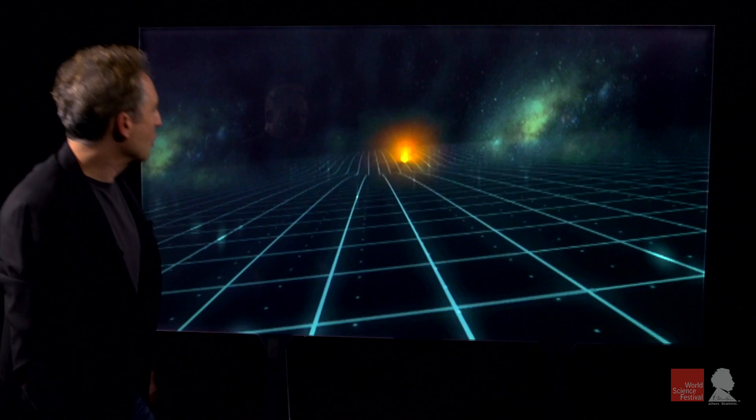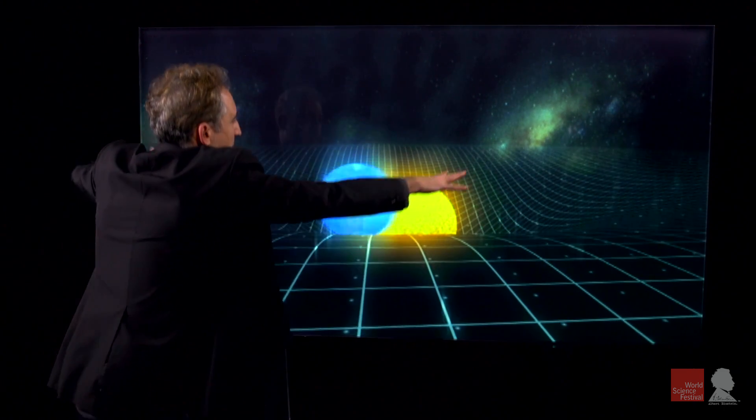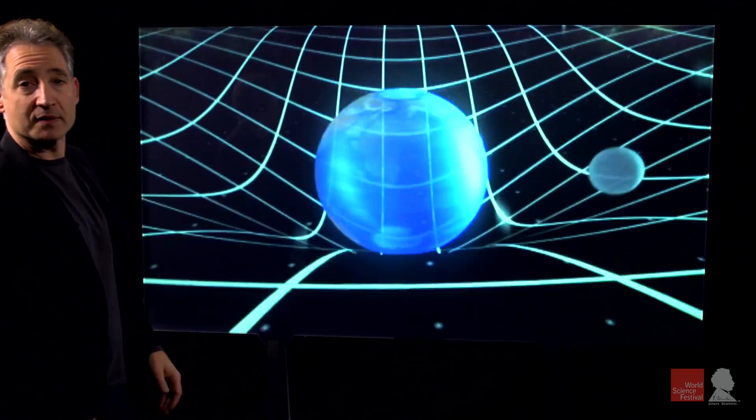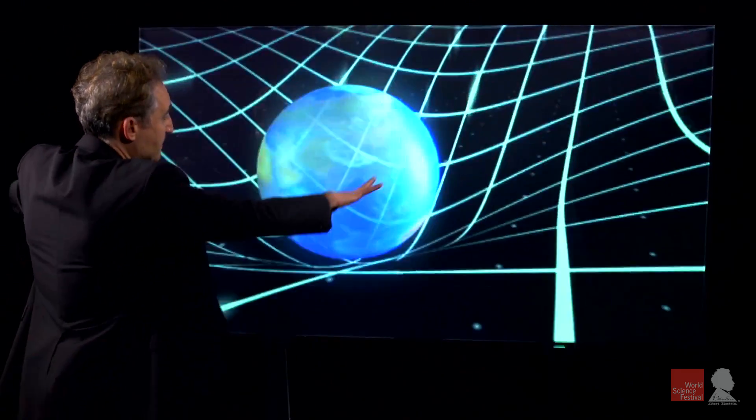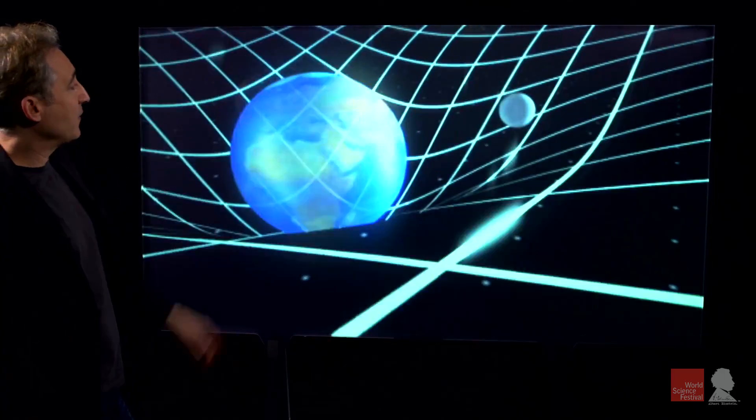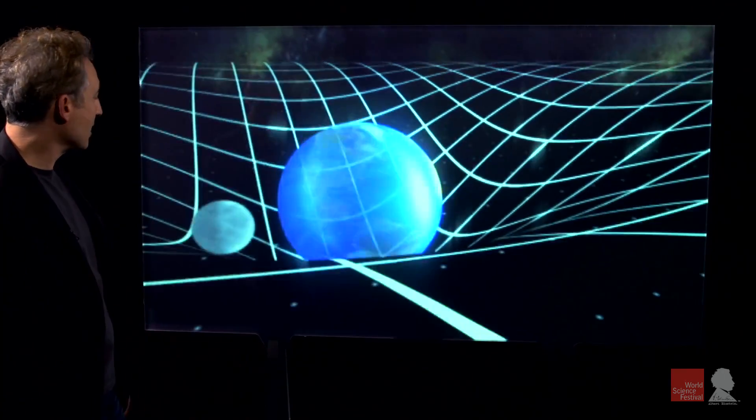Space is flat when there's no matter present. But if you bring in the sun, Einstein says the fabric of space curves. And if you look in the vicinity of the earth, earth also warps the environment. And now if you focus your attention on the moon, you see exactly what I am talking about.